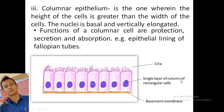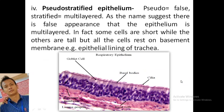Pseudostratified epithelium appears multi-layered, but as the name suggests, all cells rest on the basement membrane — some cells are short while others are tall, but all touch the basement membrane. An example is the epithelium lining of the trachea.